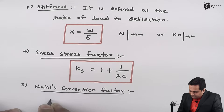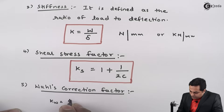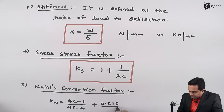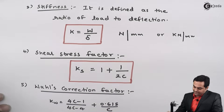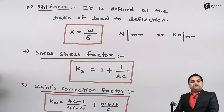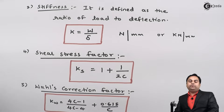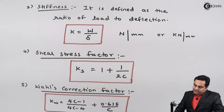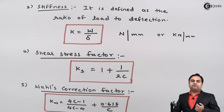Next we have Wahl's correction factor. Wahl's correction factor K_W is equal to (4C minus 1) upon (4C minus 4) plus 0.615 divided by C. This Wahl's correction factor is needed when we are designing the spring because it takes care of the curvature of the spring.